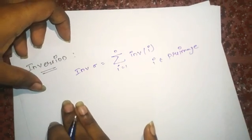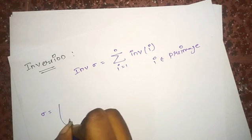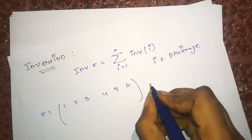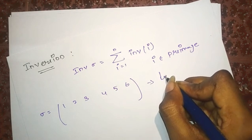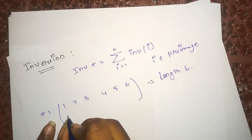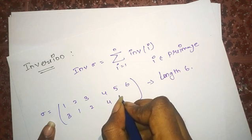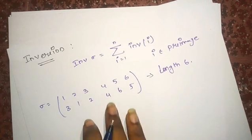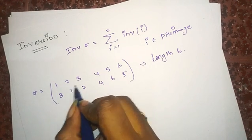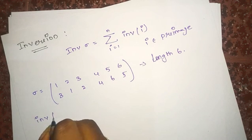I'll explain this with an example so that it will be clear. I'll take a permutation sigma of length 6: 1 2 3 4 5 6, where 1 is mapped to 3, 2 is mapped to 1, 3 is mapped to 2, 4 is mapped to 4, 5 to 6, and 6 to 5. We will calculate in increasing order, so first we calculate the inversion of 1.